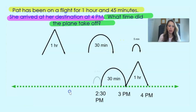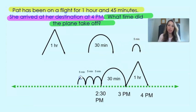Today we're going to learn how to use the number line strategy to help us solve the three different types of elapsed time problems. So buckle those seatbelts and let's get ready for takeoff.